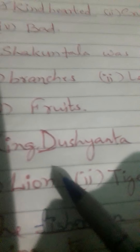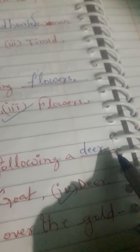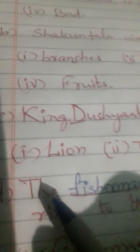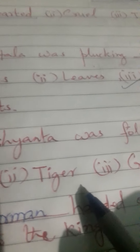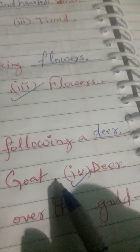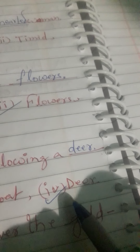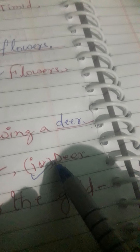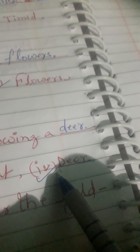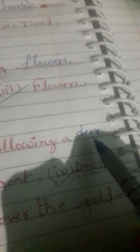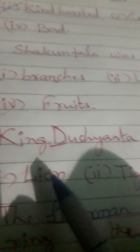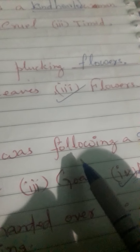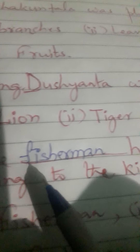(c) King Dushyanta was following a ___. You have four options: first, lion; second, tiger; third, goat; fourth, deer. Your correct answer is deer. So you have to write deer in the given blank. Consequently, it will become: King Dushyanta was following a deer.